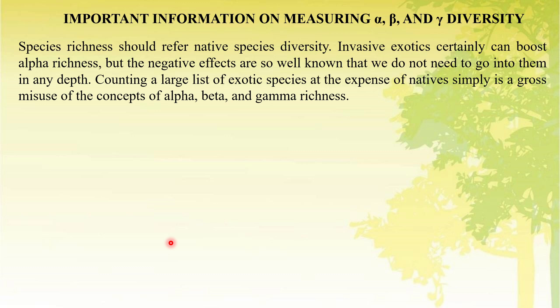Some important information about measuring alpha, beta, and gamma diversity: species richness should refer to native species diversity. Invasive exotic species can certainly boost alpha richness, but their negative effects are well known. Counting a large list of exotic species at the expense of native species is simply a gross misuse of the concept of alpha, beta, and gamma richness.